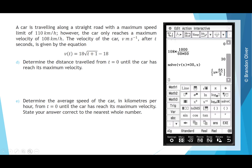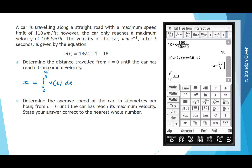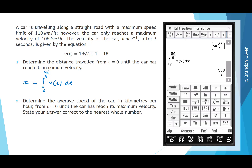For part D, we're asked to determine the distance travelled from t = 0 until the car has reached its maximum velocity. The distance travelled is equivalent to the displacement x, and equals the integral from 0 to 55/9 of v(t) dt, because the area under the velocity curve equals the distance travelled. Going into Math 2 on the keyboard, we find the integral symbol, set the terminals from 0 to 55/9, and integrate v(x) with respect to x. Executing gives 950/9. So the distance is 950/9 metres.